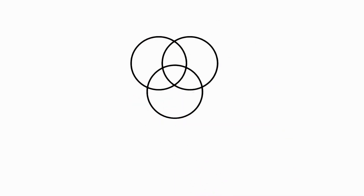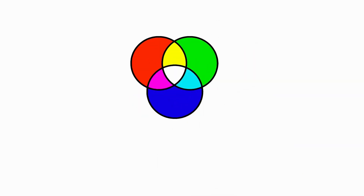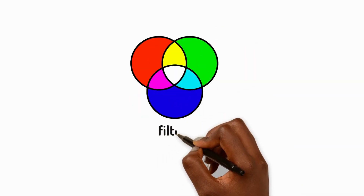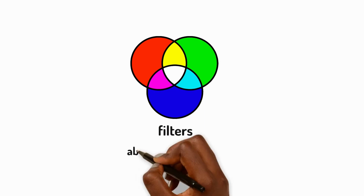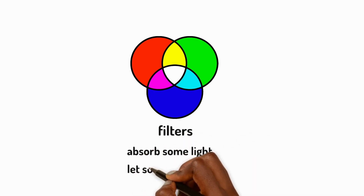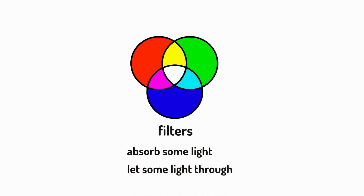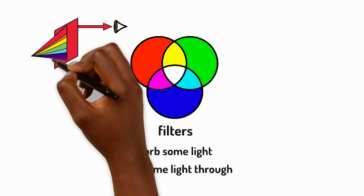We can also use transparent or translucent materials called filters to change the colour an object looks. These materials absorb some light but also let some light through to the other side of the filter.